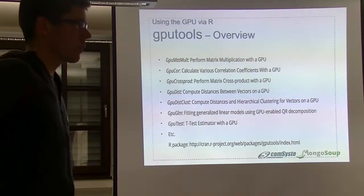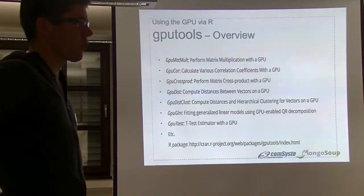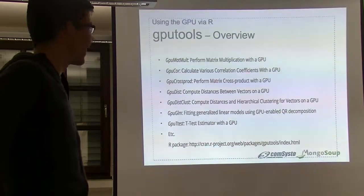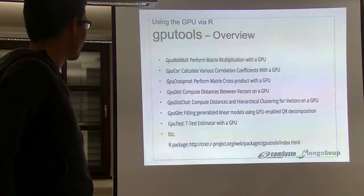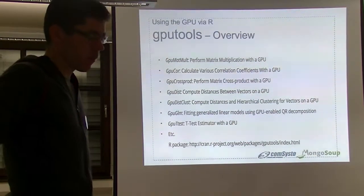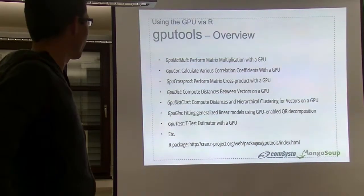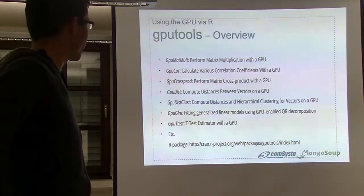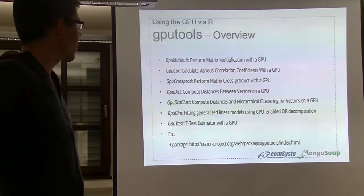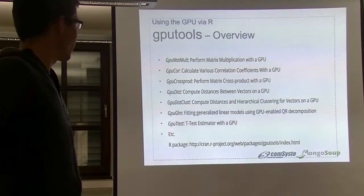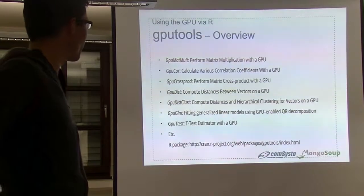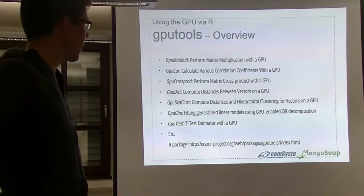I had to be careful — it was not easy to get it running. Sometimes it crashes the MacBook, and if you lose graphics output, it's difficult to close anything. GPU tools delivers some methods from linear algebra, like matrix multiplication, correlation computation, matrix cross products, distance computation between vectors, and computation of generalized linear models, among several other methods. You can use these methods just like standard R methods — it's the same name most times, only with GPU in front.